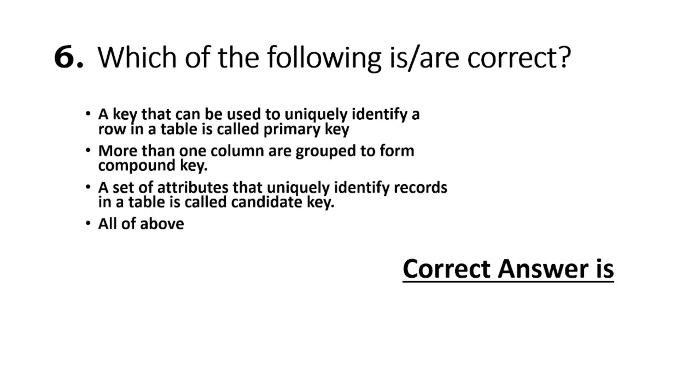Question 6: Which of the following is correct? A key that can be used to uniquely identify a row in a table is called primary key. More than one column are grouped to form compound key. A set of attributes that uniquely identify records in a table is called candidate key. All of the above is correct.